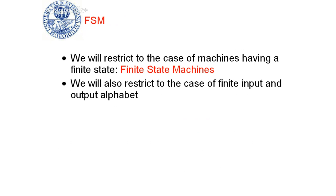We will consider two classes of state machines. One is finite state machines, but it is also possible to think of systems represented by an infinite number of possible states — and in fact, most of the programs you write assume an infinite state machine. What we're interested in here are systems defined by a finite number of states. We will also restrict them to the case of finite input and output alphabets or sets of symbols.